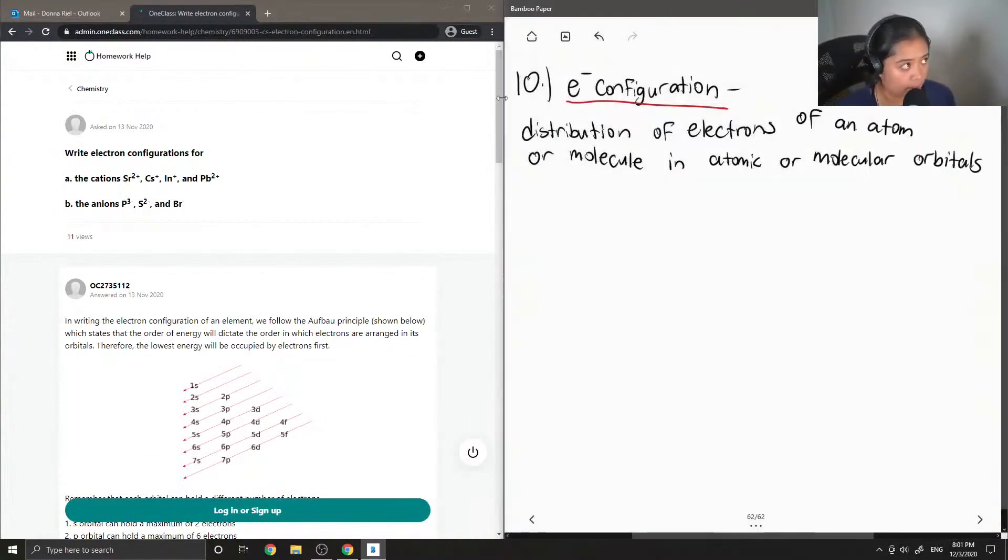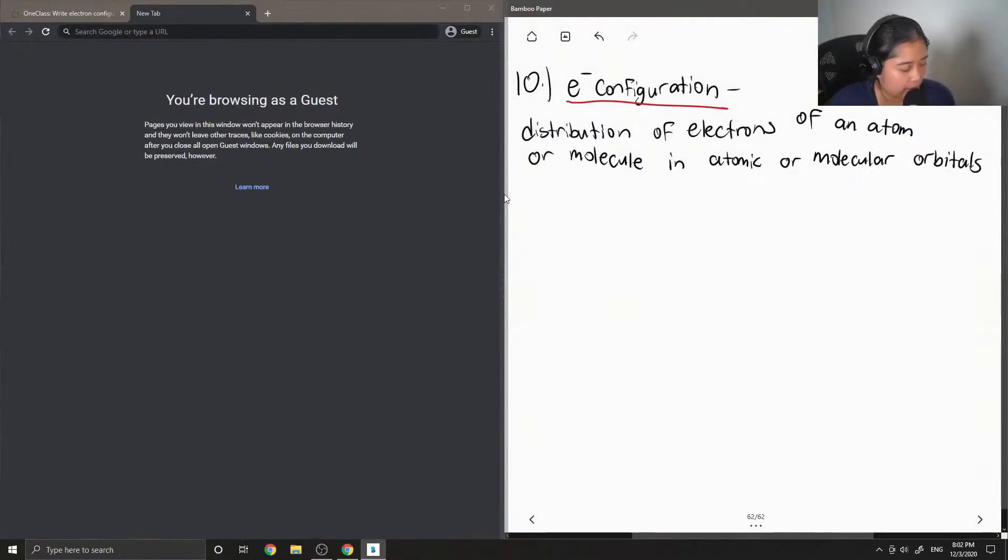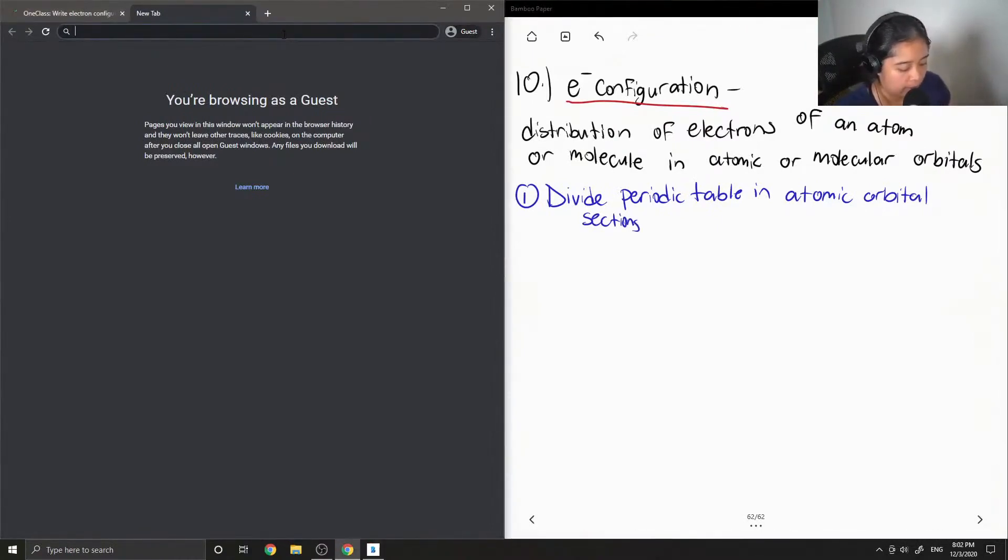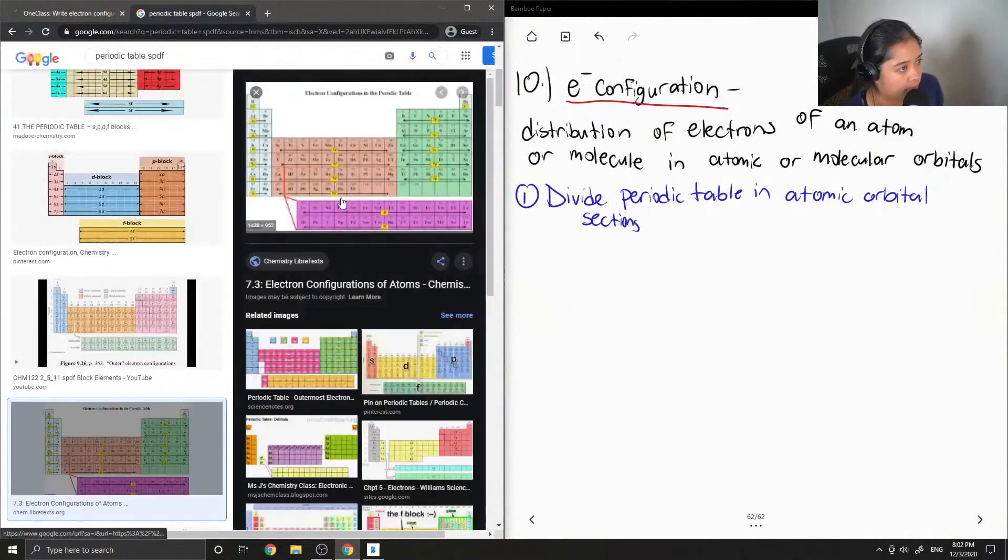Okay, so this is a multi-step kind of question. So I'm also going to write out all the different steps on how we would calculate electron configuration. So the first thing is to divide the periodic table into atomic orbital sections. So I'm going to look this up on Google just to show what it would look like if we were to divide it into atomic orbital sections. So, I'll just search periodic table spdf.